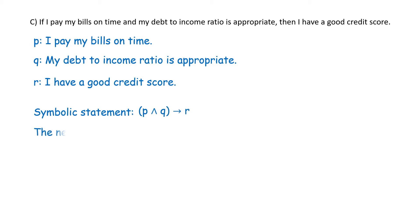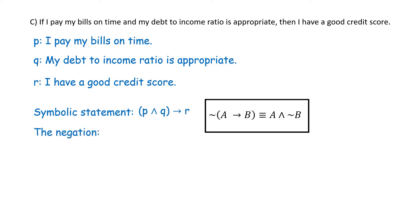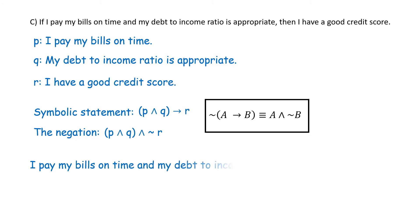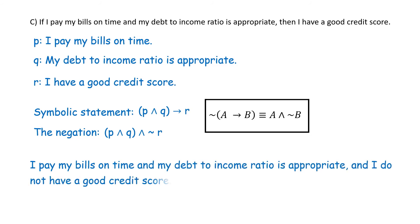We need to negate that. The negation of A implies B is A and not B. Here A is our P and Q together, and B is R. Applying it: P and Q and not R. In words: 'I pay my bills on time and my debt to income ratio is appropriate and I still do not have a good credit score.'